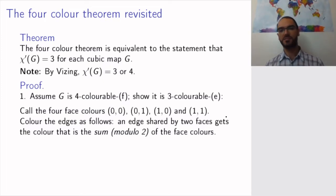And so, assume that you have colored the faces in these colors. And now, here comes a way to color the edges. You give each edge the color that is the sum, modulo 2, of the two face colors. So, let's look at an example. Let's look at the following cubic map.